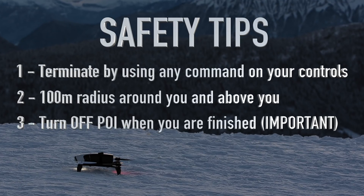Last but not least, number three, ensure to switch off point of interest before flying the drone normally. If you do not do this, the drone will fly erratically and only point in the direction of the POI. This was due to some people complaining that the drone was having a mind of its own. But in reality, this was because POI was still activated and the drone would only fly relative to the point of interest.